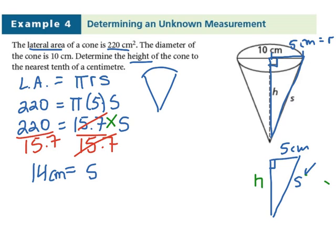Now we can go back to our picture, we can erase the s, and we can just put 14 centimeters. Now we have two out of the three pieces for Pythagoras. I'm just going to erase this lateral area. Now we have to find the height.